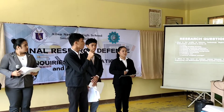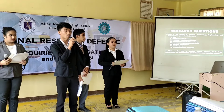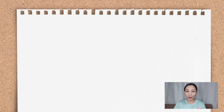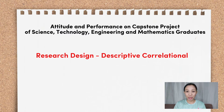In this discussion, I will utilize the research title of my students in Inquiries, Investigation, and Immersion, in which they survived the final defense with flying colors. I asked their permission if I could use them in my video lesson, and I'm very thankful that they agreed. Their research title is: Attitudes and Performance on Capstone Project of Science, Technology, Engineering, and Mathematics Graduates. Looking at this research title, we can immediately identify its research design, which is Descriptive Correlational.